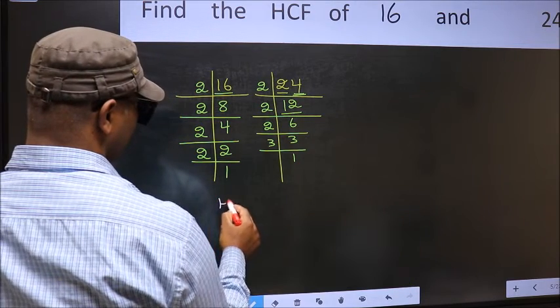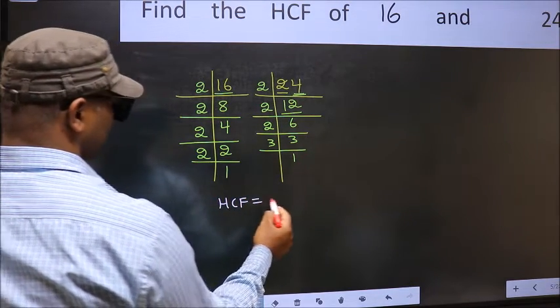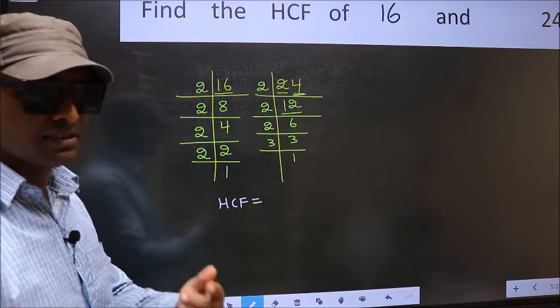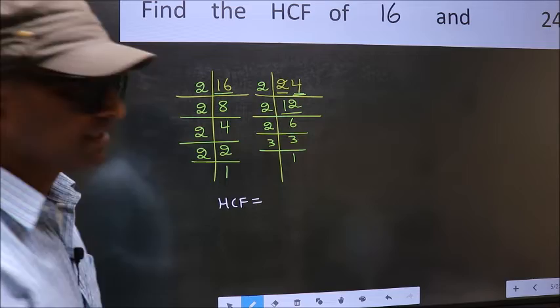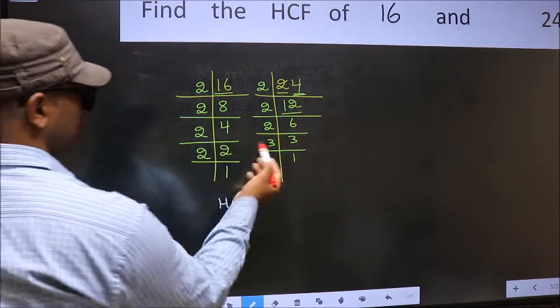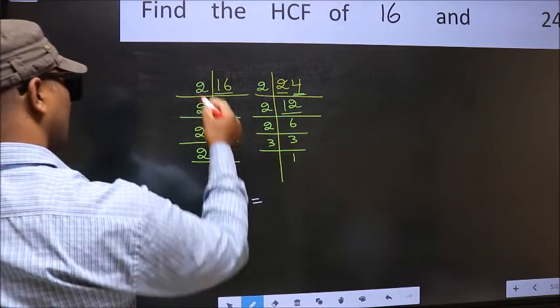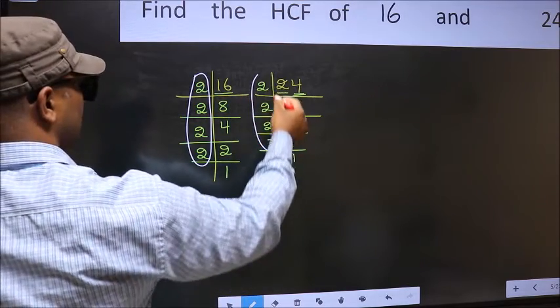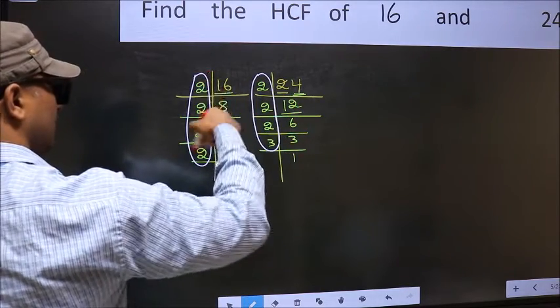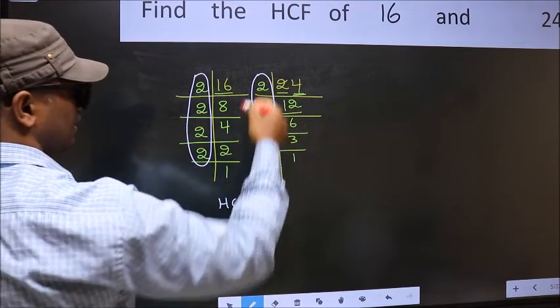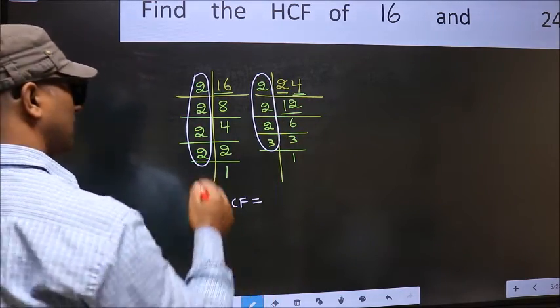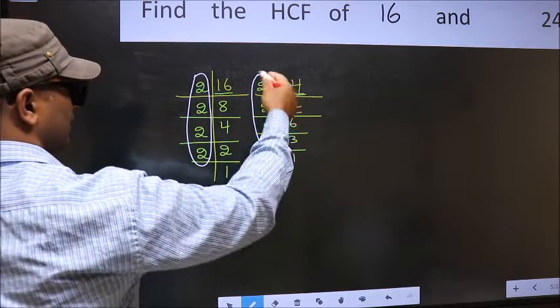Therefore our HCF is the product of the numbers which should be present in these two places. That is here and also here. Here and here.